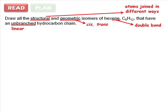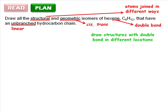So our plan will be pretty straightforward. We'll draw linear structures with the double bond in different positions and check for the possibility of cis-trans isomers.